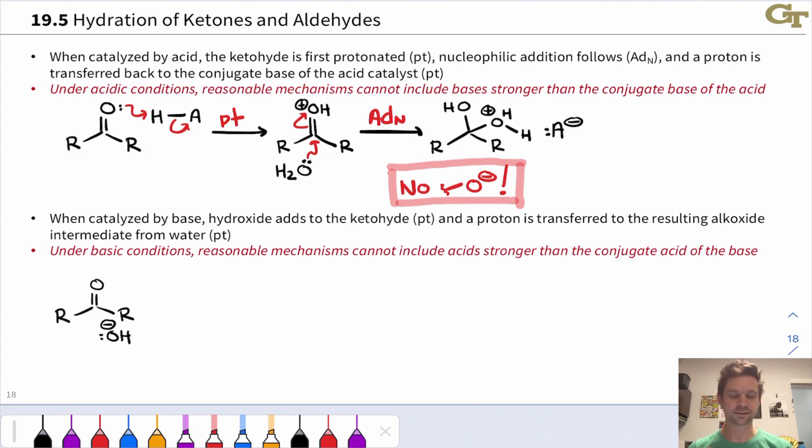We've also got the conjugate base of the acid around here. I'm just calling that A minus, that could be water or some other base in the reaction mixture, basic solvent molecule, for example. This can remove a proton from water, from the water molecule that just added, to give us the neutral product here and regenerate the catalyst. It's important we regenerate the catalyst since this reaction is catalytic in HA, not a full equivalent of HA is used.